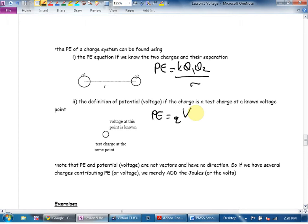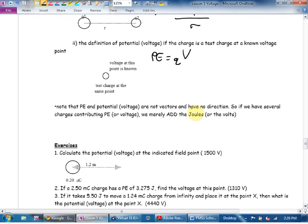We can also find energy by saying the energy at any location is going to be the charge at that location times the voltage at that location. Little note. Little reminder. Potential energy and potential are not vectors, so they have no direction. That means that we're going to include the signs, positives and negatives. But, the other nice thing is that means if we have several charges contributing potential energy or voltage, we just add them all up. We don't add them vectorially. Add them up.